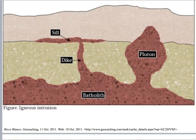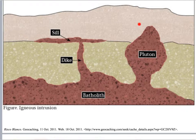Here's a diagram showing the two features we just talked about. The batholith is very large and very deep — 'batho' means deep, 'lith' means rock, so deep rock. Plutons can be part of the batholith, but they are going to come up. That shape looks like a balloon.